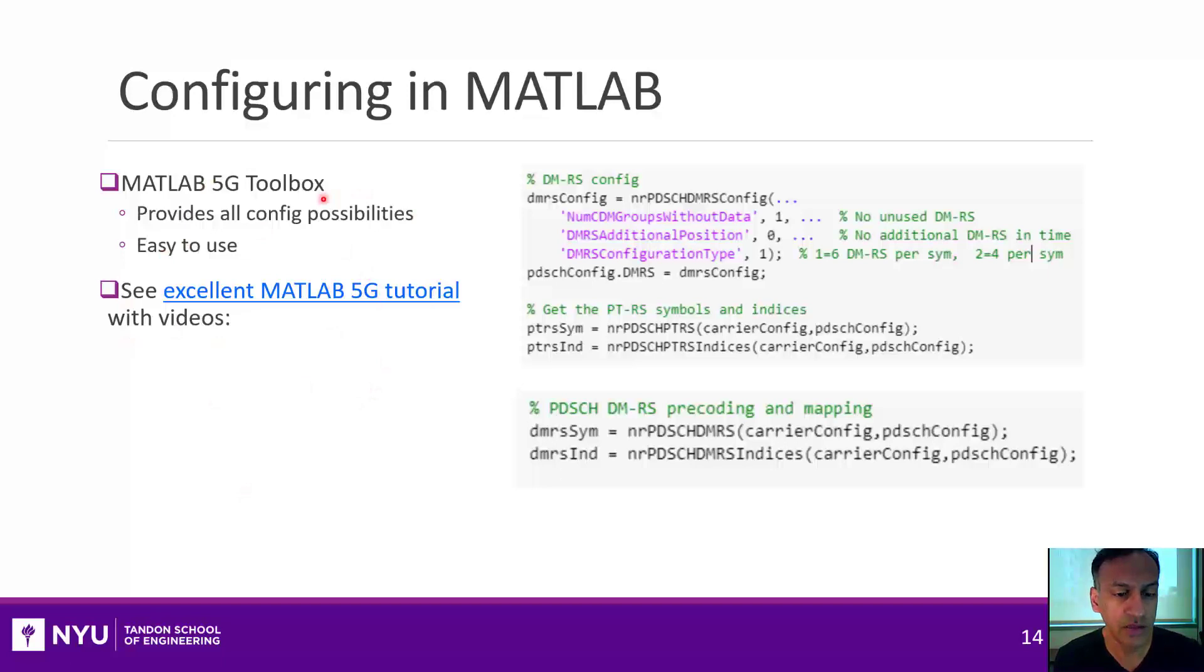All right, talking about that, the 5G toolbox. So you can actually generate configurations for the DMRS really easily. So they have a data structure called this new radio PDSCH DMRS. So the DMRS is always sent along with PDSCH, which is the data channel. And it has various parameters in this, like whether you want to have unused DMRS, how many symbols in time, how many subcarriers in frequency, and so on. So you can play around with this.